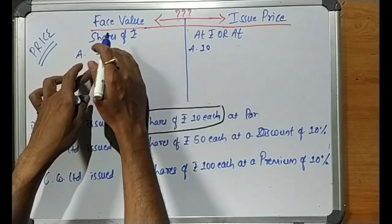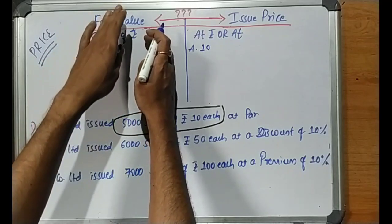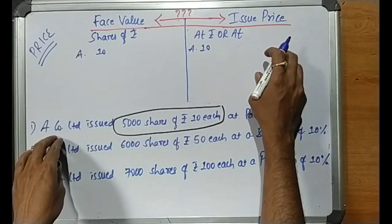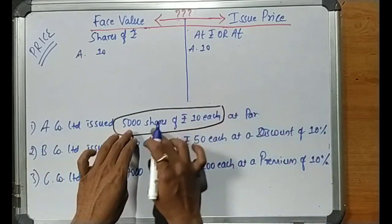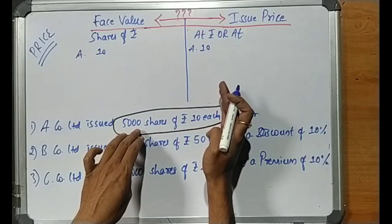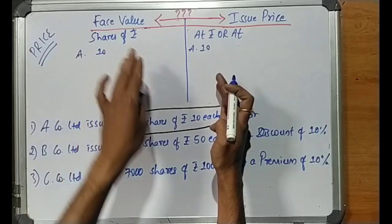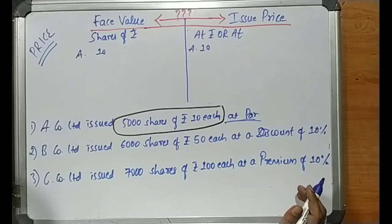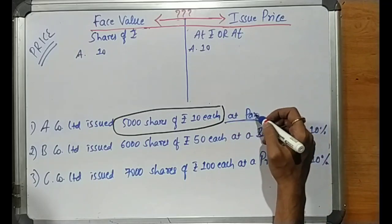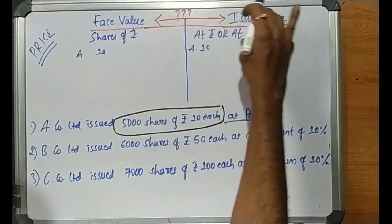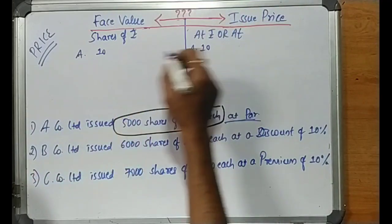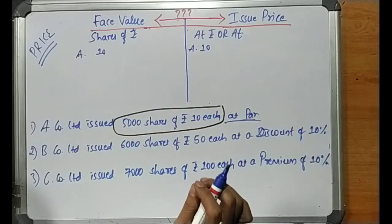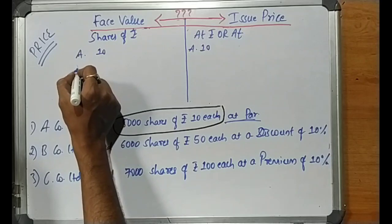So in this case, the sentence 'shares of rupees' part gives us the face value, and continuing 'at rupees' or 'at' gives us the issue price. Here, A Company Limited issued 5000 shares of rupees 10 each — so rupees 10 is the face value. Since they are issued at par, face value and issue price are equal, so issue price is also 10.